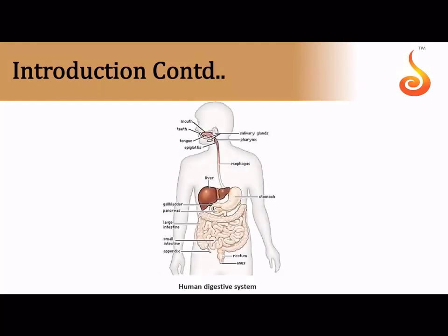A quick view of our alimentary canal: it is roughly a tubular structure with regional, anatomical, and histological variations, extending all the way from the mouth to the anus. This is referred to as the digestive tract or the alimentary canal. Associated glands include the salivary glands in the oral cavity, the liver and pancreas in the abdominal region, gastric glands within the stomach, and intestinal glands within the small intestine.